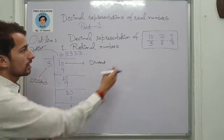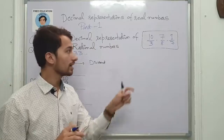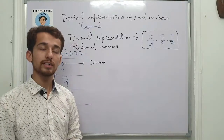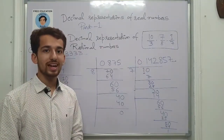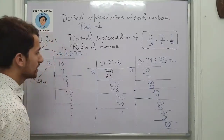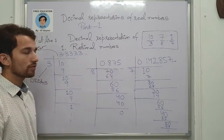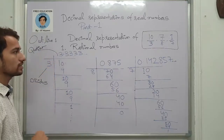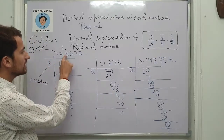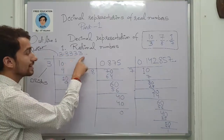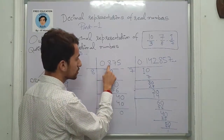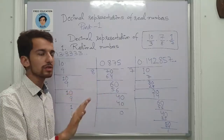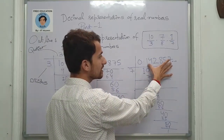Let's now look at the remaining two rationals — 7 by 8 and 1 by 7. Pause the video and try to divide them yourself. After calculating all the rationals, we can make some quick observations. In the first case, the digit 3 was repeating again and again in the quotient. In the second case, it terminated — it is finite with no repetition. In the third case, there is again some repetition.